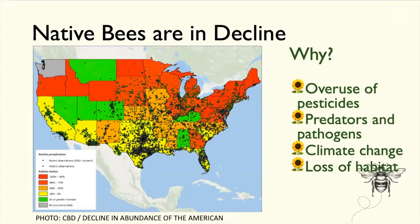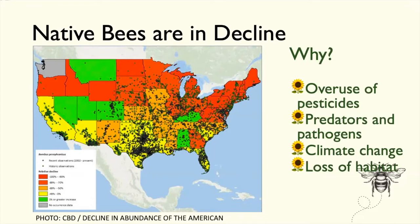Several factors drive bee decline: overuse of pesticides, predators like wasps and birds and robber flies, alien bee species competing for pollen resources, and climate change. Climate change disrupts synchronicity — a specialist bee's preferred wildflower may shift its range northward faster than the bee can adapt. The bee hibernates, emerges, and its food source may already be gone.